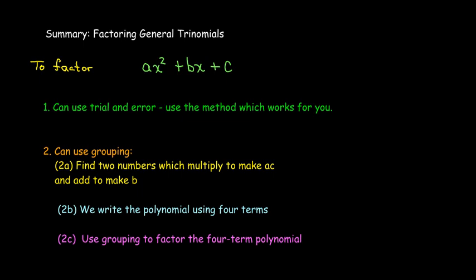In summary, if we have ax² plus bx plus c, you can use trial and error. If it works for you, go for it — you don't have to show work if you can do the trials in your head. Otherwise, or if you get stuck or have a mental block, you can go back to grouping: find two numbers which multiply to make a times c and add to make b. That tells you how to rewrite the expression as four terms, and then use factoring by grouping.